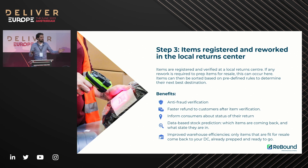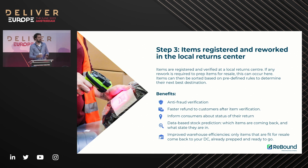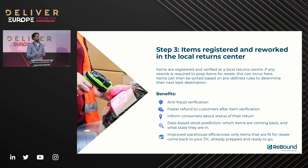Rebound has a global network of local return centers in every country. A consumer will never have to ship internationally — they just see an address on the label which is in their own country. That means a parcel is never in transit more than around three days. After three days, we receive it in our hub, open the parcel, and verify the contents to decrease the fraud issue in this industry — making sure whatever the consumer said they were returning is actually returned. We can then initiate a message saying this consumer is good to go and you can pay out the refund.